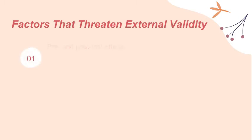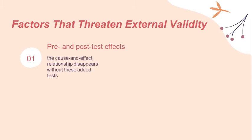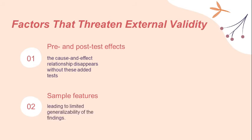The first factor is pre and post-test effects — when the pre or post-test is in some way related to the effects seen in the study, such that the cause and effect relationship disappears without this added test. The second factor is sample features — when some feature of the particular sample was responsible for, or partially responsible for, the effect, leading to limited generalizability of the findings.